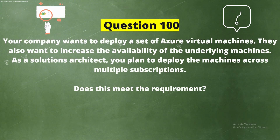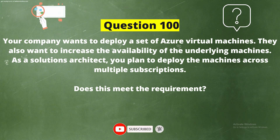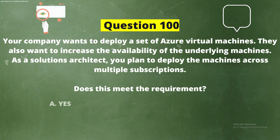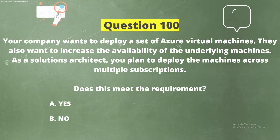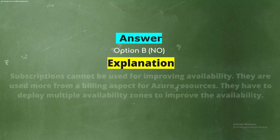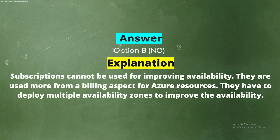Question 100. Your company wants to deploy a set of Azure virtual machines and increase the availability of the underlying machines. As a solutions architect, you plan to deploy the machines across multiple subscriptions. Does this meet the requirement? The correct answer is Option B: No. Subscriptions cannot be used for improving availability — they are used more from a billing aspect. To improve availability, you need to deploy across multiple availability zones.